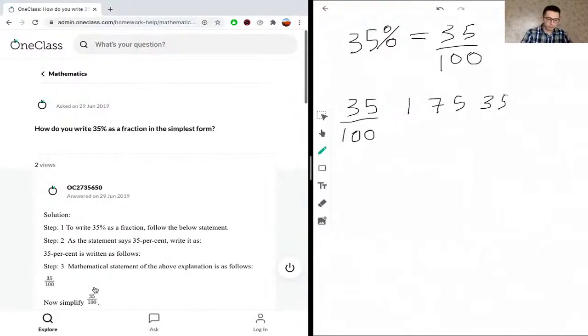Right away we see that we have 5 in both 35 and 100, so they're both divisible by 5. We'll divide the top and the bottom by 5. This gives us 7 on top, so 35 divided by 5 equals 7, and then 100 divided by 5 is 20.